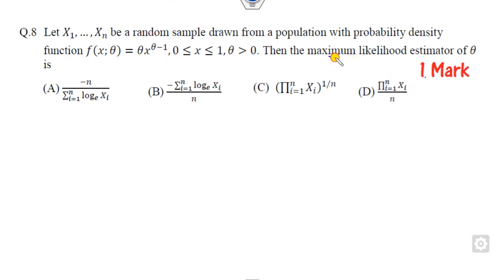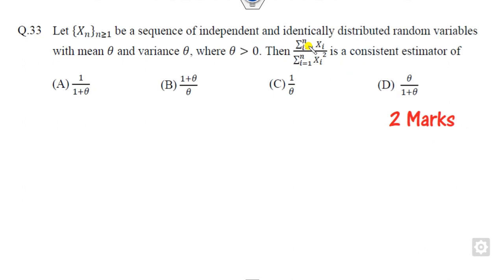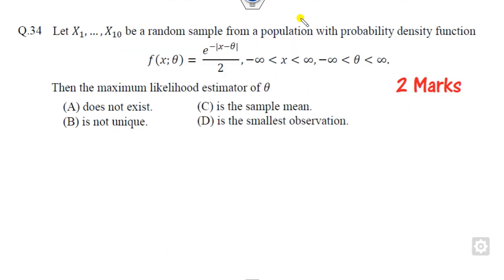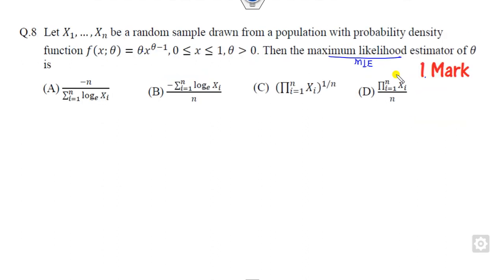Question 8 is one mark and you have to find the MLE of the parameter theta. Question 31 requires finding the estimator using the method of moments and is worth two marks. Question 33 is related to the consistent estimator when the variables are distributed identically and independently, also two marks. Question 34 is related to the MLE of a distribution, again two marks. So that is 2 plus 2 plus 2 plus 1, which is seven marks you can get in a very simple manner.